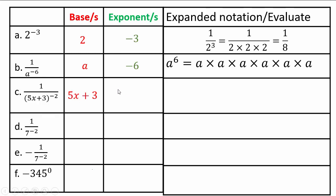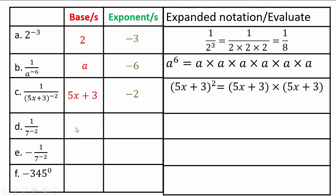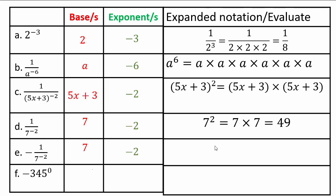Here, 5x plus 3 is our base, negative 2 is our exponent — because it's in the denominator it comes to the numerator, which is the same as 5x plus 3 times 5x plus 3. Base is 7, exponent is negative 2 — in the denominator with a negative exponent, it becomes numerator 7 to the 2nd power, which is 7 times 7 or 49. Here, we have negative of 1 over 7 to the negative 2nd power: base is 7, exponent is negative 2, it's negative off — so it'll be negative off 7 to the 2nd power, or negative 49.